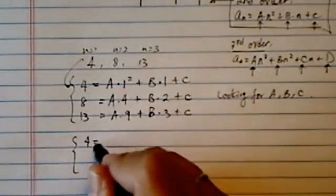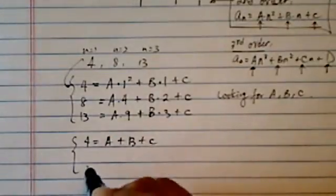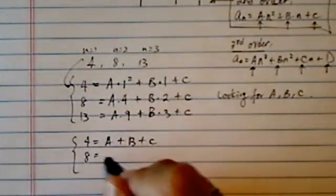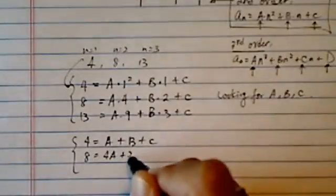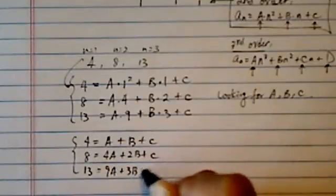What I have done is simplify the equation here. So I have a, b, and c. That's the first equation. And the next one I have 4a plus 2b plus c. And then 13 is equal to 9a plus 3b plus c.